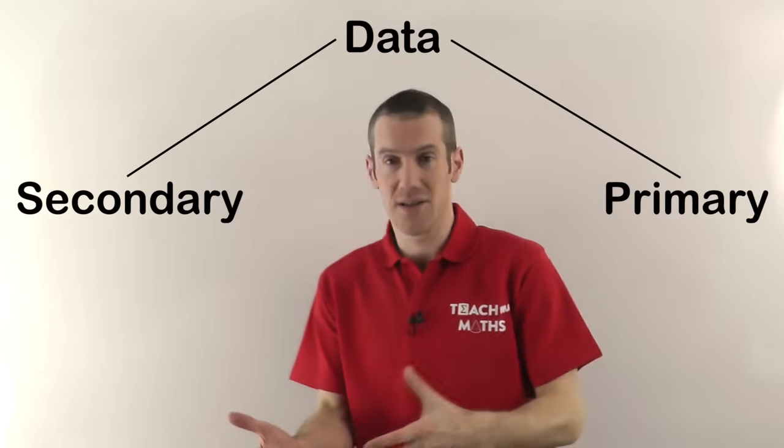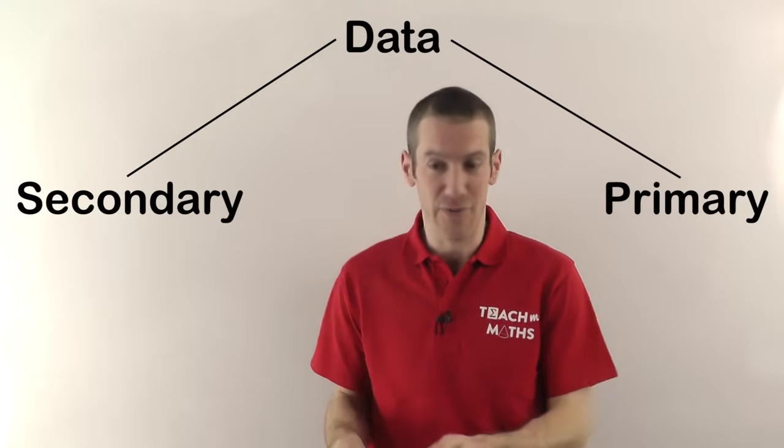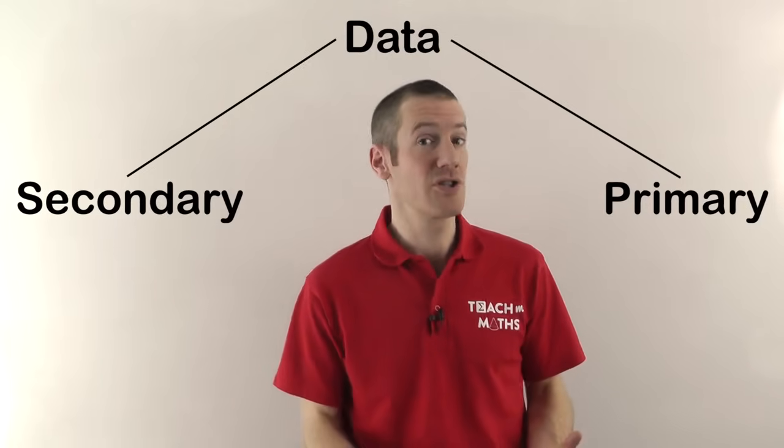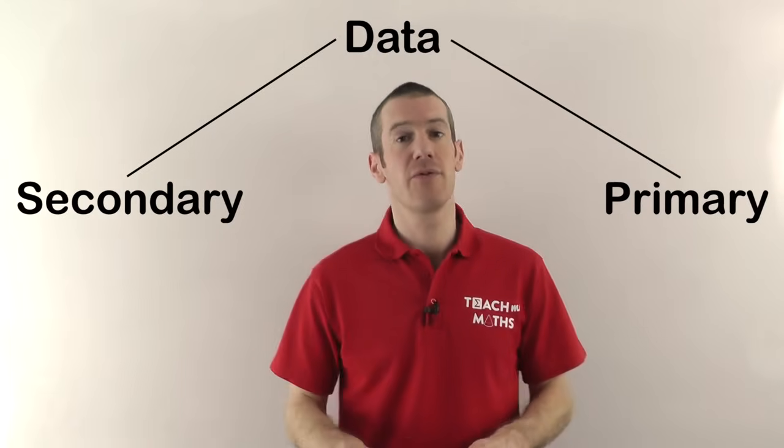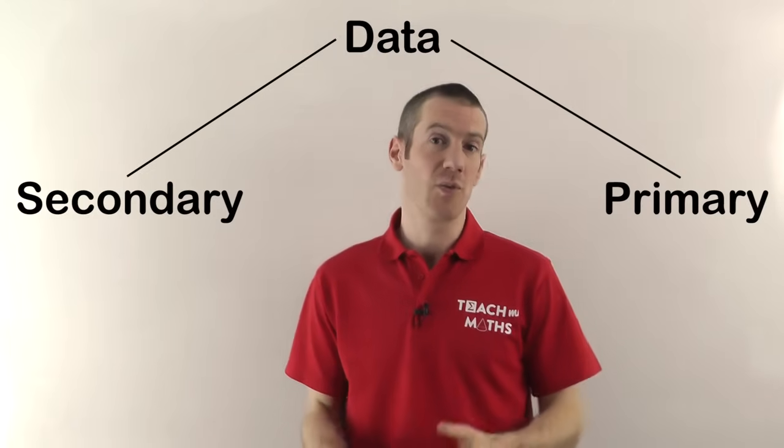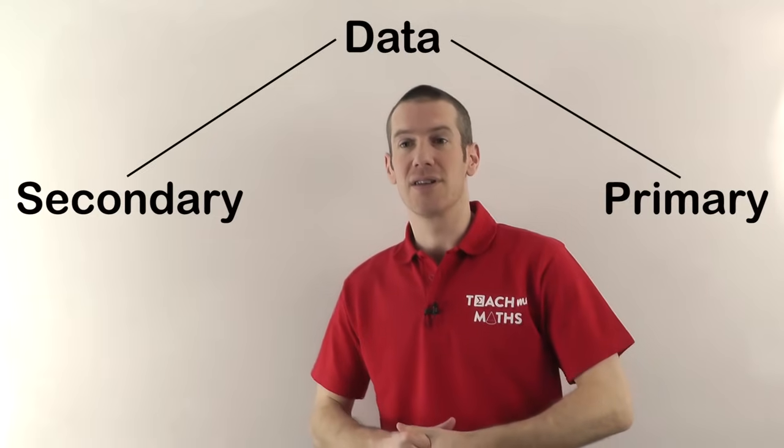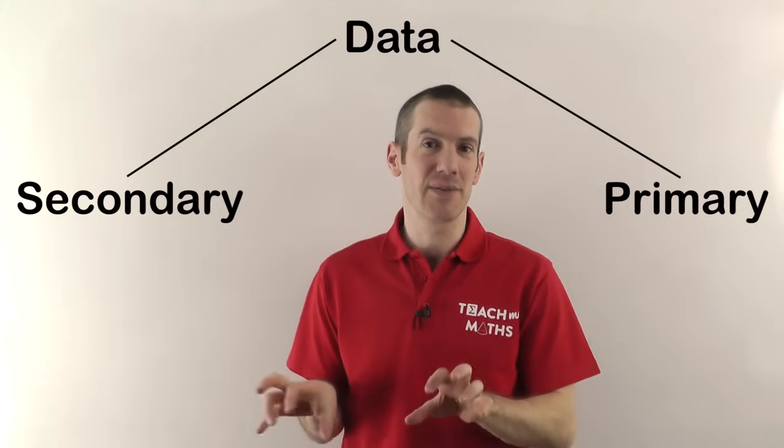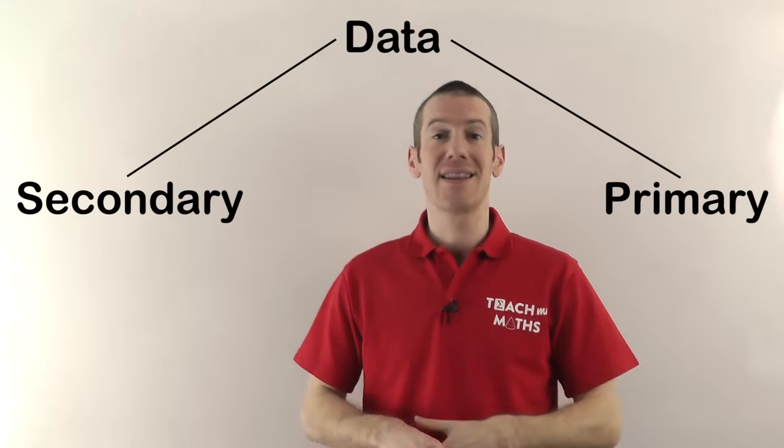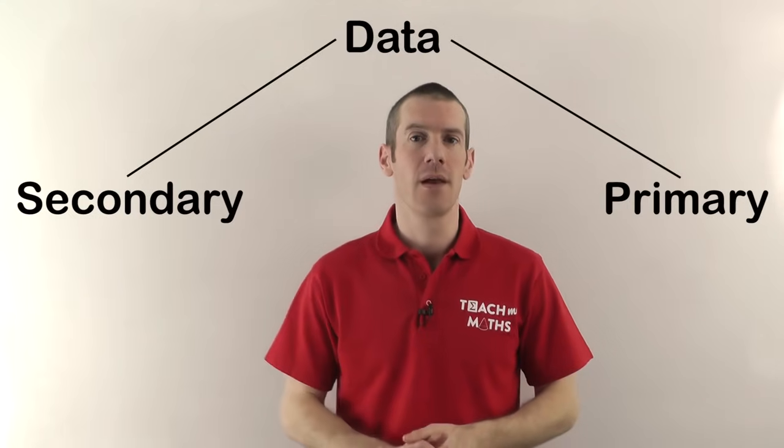Primary data is where you've gone out and found the data yourself. So if you went to Sweden and to Brazil and you asked people how tall they are and you wrote down the results, then that will be primary data because you collected it yourself. Secondary data, on the other hand, is data you've got from another source. So if you just went online and looked at the government pages for Sweden and Brazil and got statistics about how tall people are in those countries, that will be secondary data.